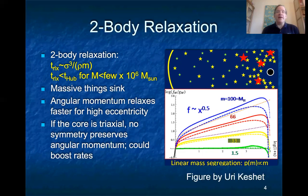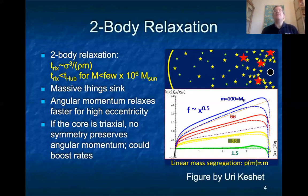Another intriguing possibility is triaxiality of the core. If the core is in fact triaxial, there is no symmetry to preserve the angular momentum of individual orbits. This means that orbits could come in from large distances and yet have very small pericenters, rather than having to wait for two-body relaxation and mass segregation.